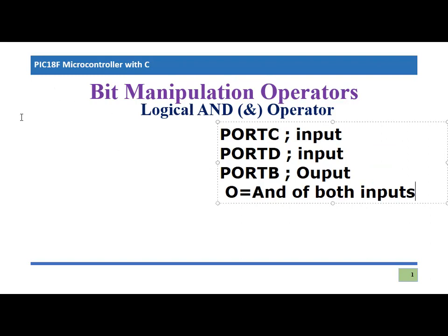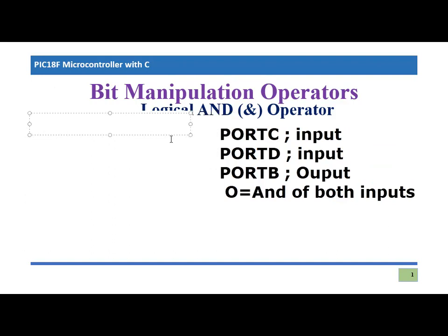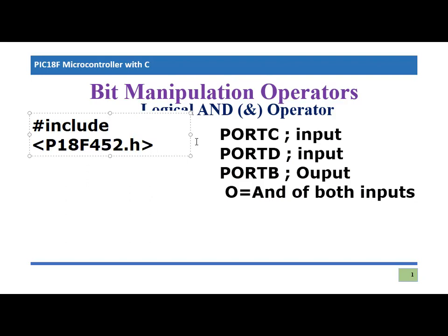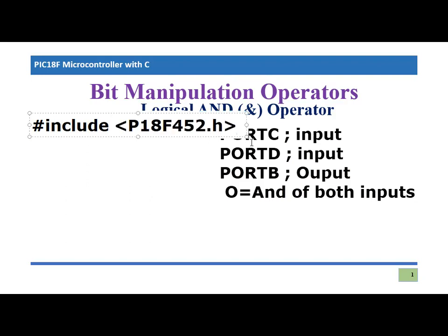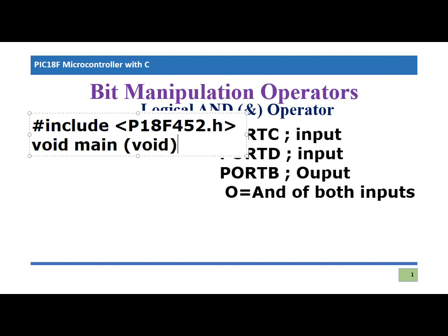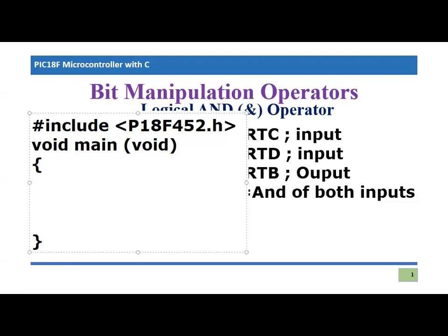Let's write the code. I'm going to write a complete code so that you can easily understand it. First, we write: #include <p18f452.h> — this is our header file, included to ensure it works correctly in the C compiler when we build it. In the next video I will also explain how to compile C code for the PIC18F microcontroller and implement it in Proteus. This is the basic main structure of the program.